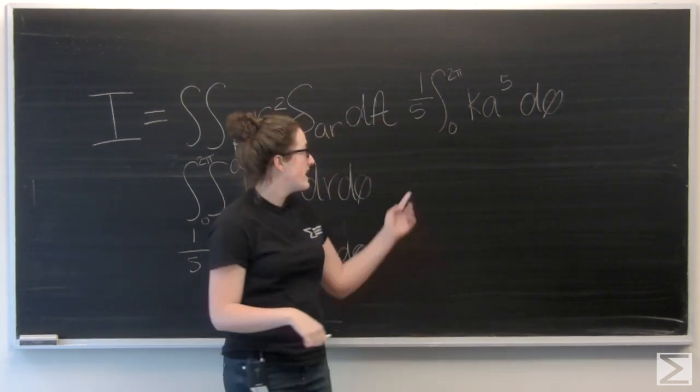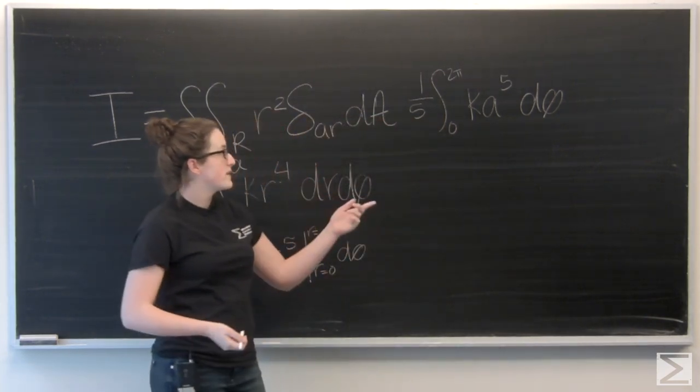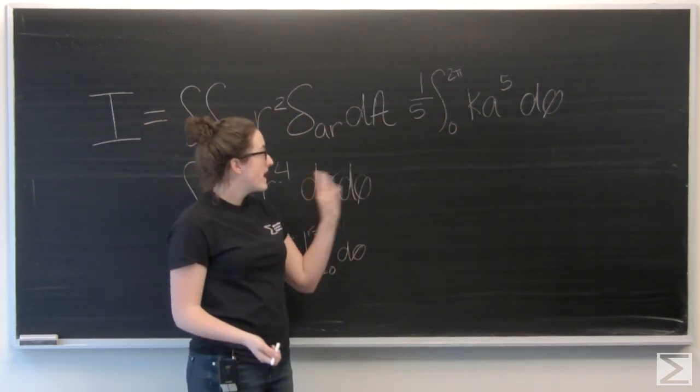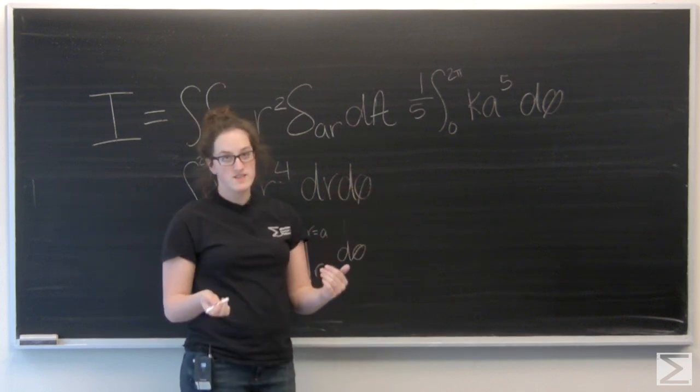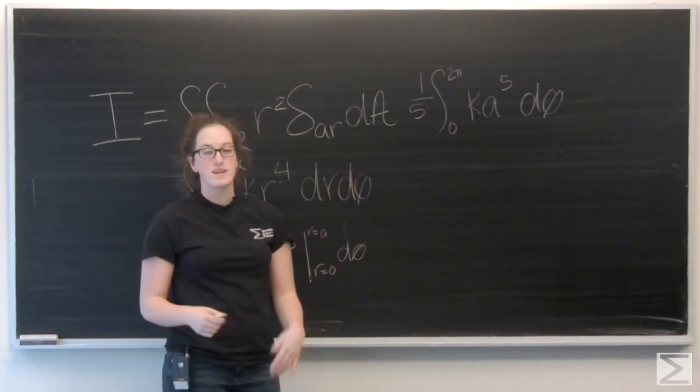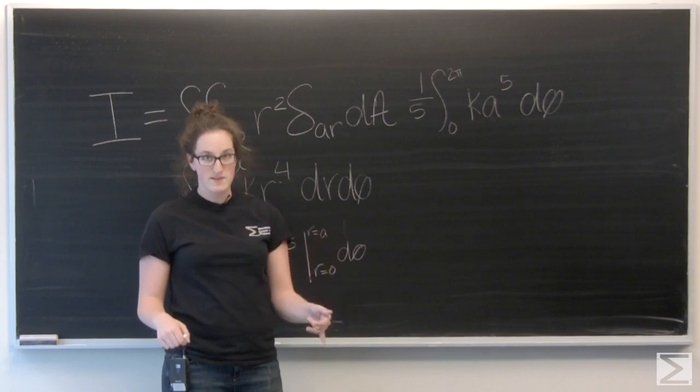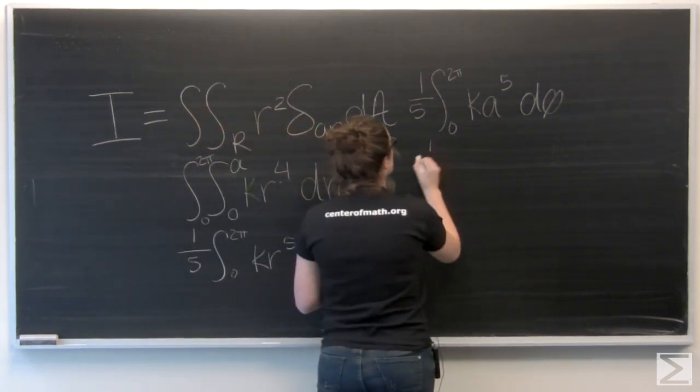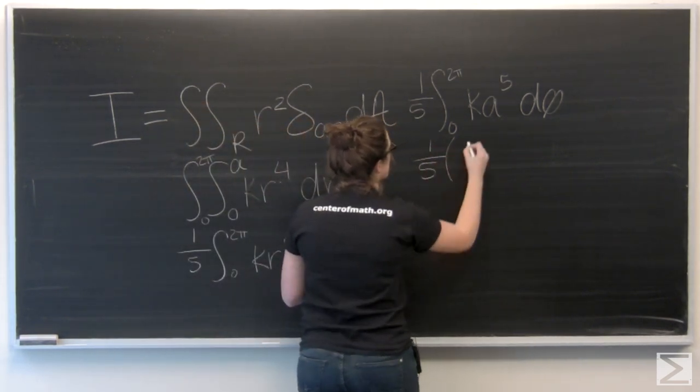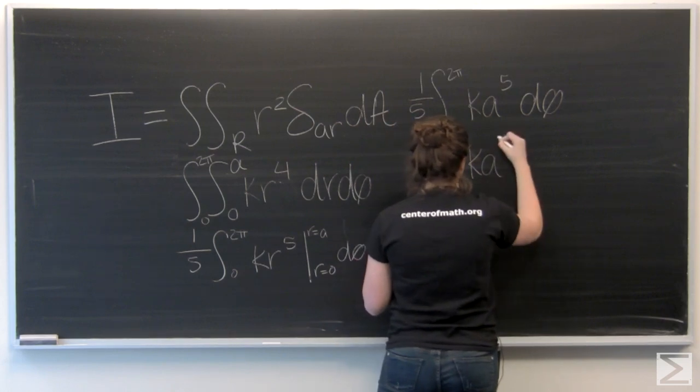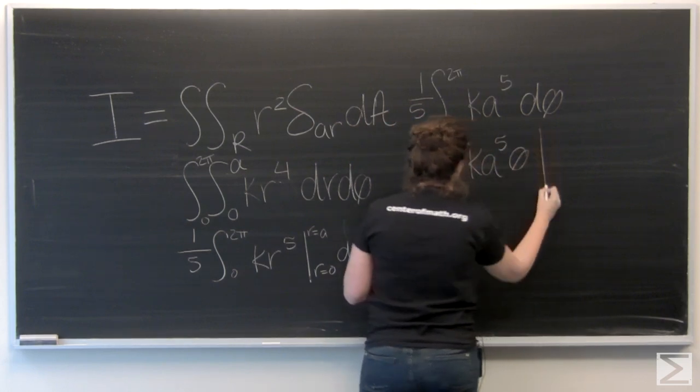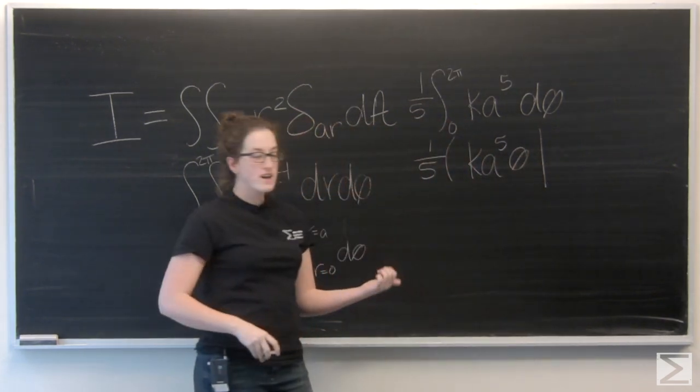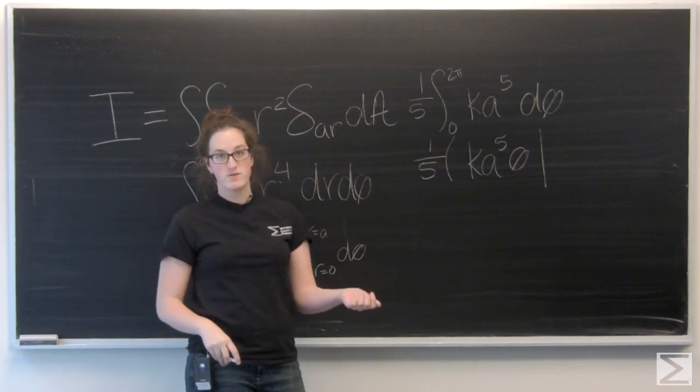So now I want to integrate k a to the fifth with respect to theta. Well, k and a are both treated like constants here. So when I integrate that, I'm going to get k a to the fifth times theta. And then I'm going to evaluate that from theta equals 0 to theta equals 2 pi.